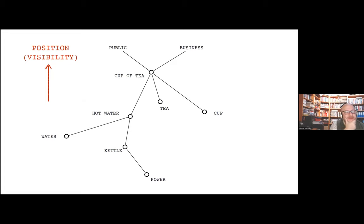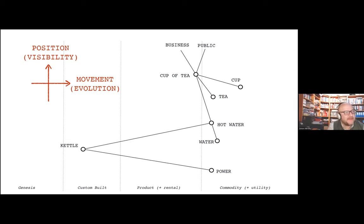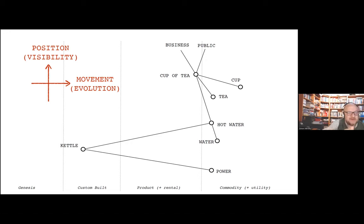This is still a graph, not a map — it gives you anchor and position. To turn it into a map we have to add movement. It turns out all of these different nodes are forms of capital and they evolve through competition — whether conflict, collaboration, or cooperation — all have the same effect. They force something to evolve. You start with the genesis of novel new items, then custom-built examples, then products and rental services, and eventually commodity and utility services. Simply taking the graph and asking 'how evolved is this component?' turns it into a map.